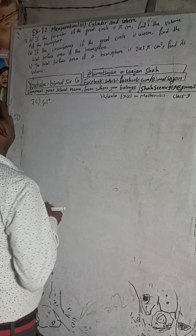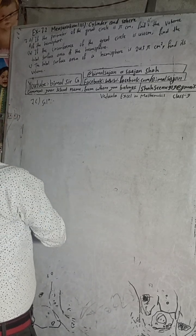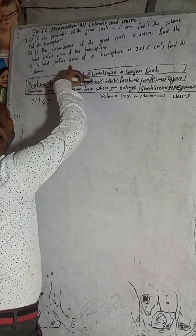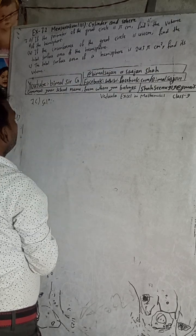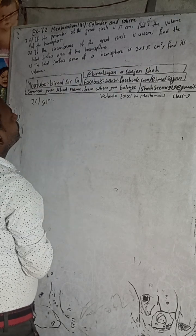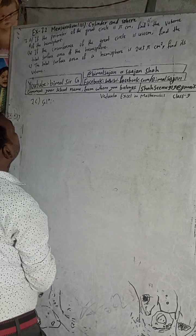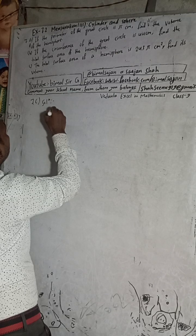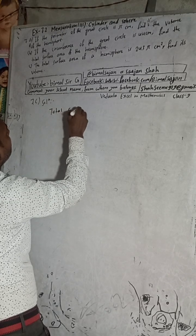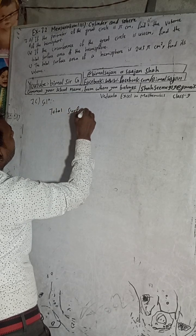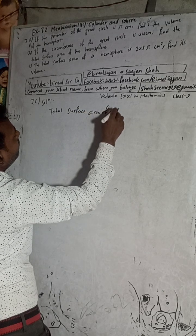The total surface area of a hemisphere is 2435 cm squared. We need to find its volume. So here, what is given is: total surface area of a hemisphere.